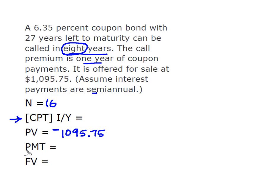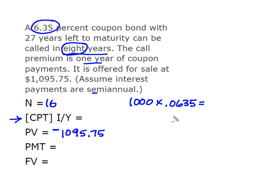Now we need our payments — that's our coupon rate. We take our coupon rate of 6.35% times our par value of $1,000, which gives us an annual payment of $63.50. But since this is based on semi-annual payments, that gives us semi-annual payments of $31.75.